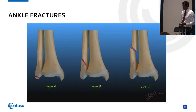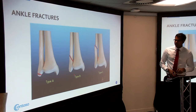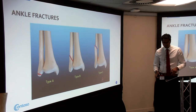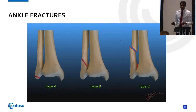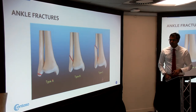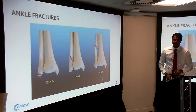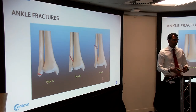For ankle fractures we use the Weber classification — types A, B, and C. Type A is usually from inversion injuries — we put them in a boot, get them weight bearing, as ankle stability isn't greatly compromised. The ATFL attaches to the distal fragment so if it doesn't unite there may be later instability, but in the acute setting we manage conservatively and the fracture usually heals well.